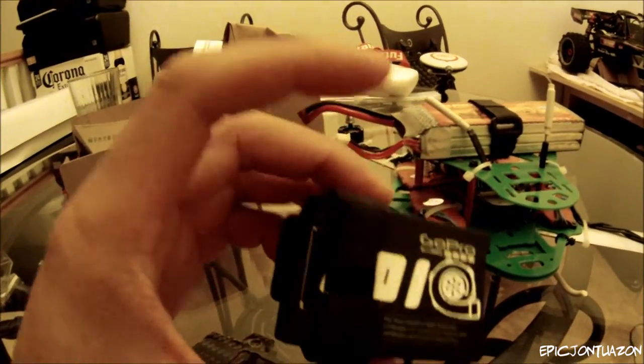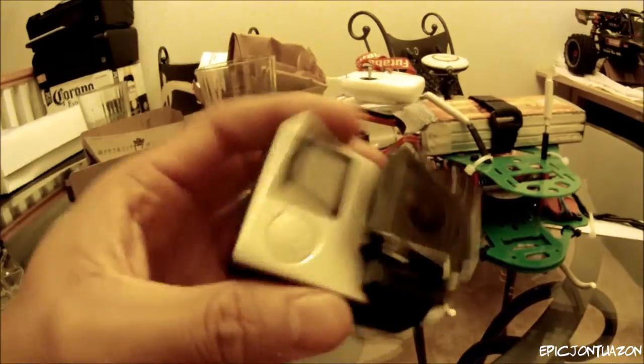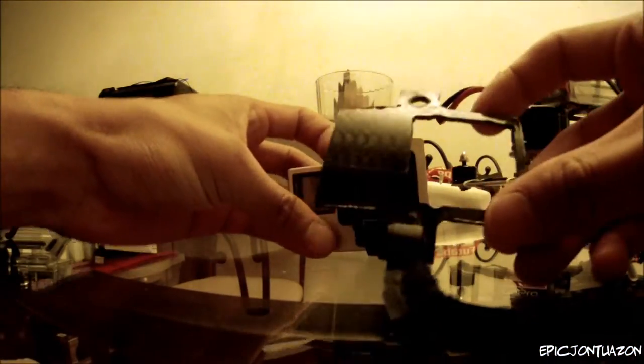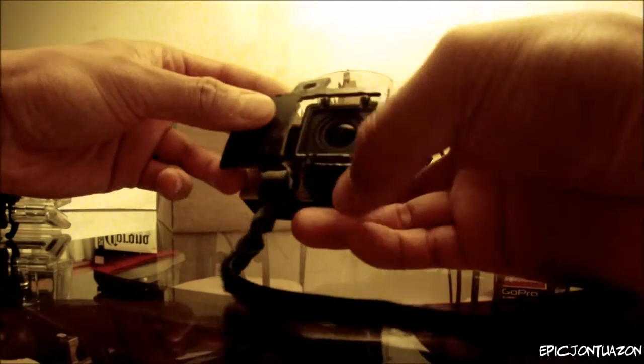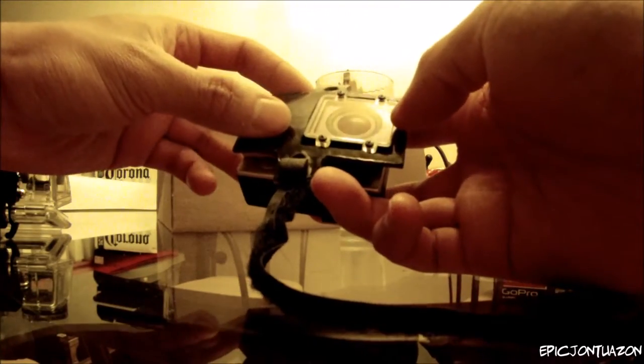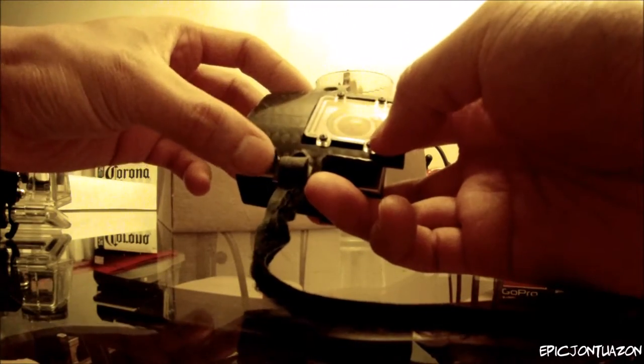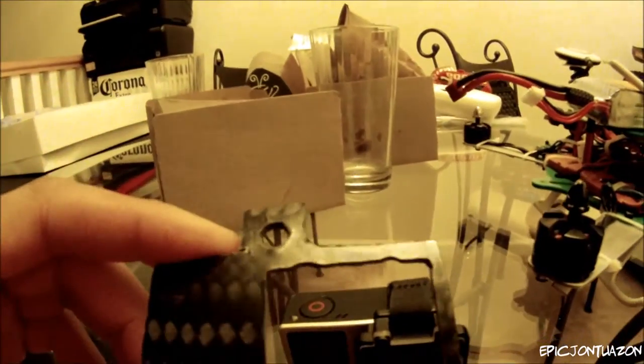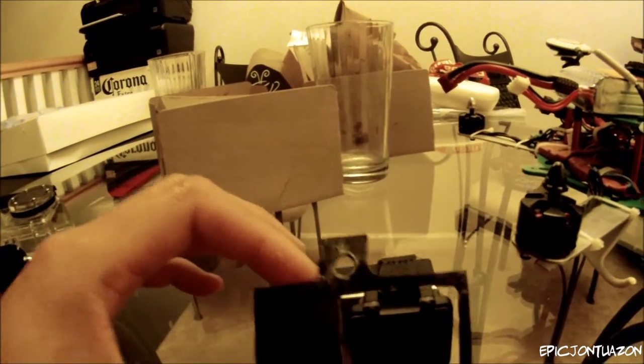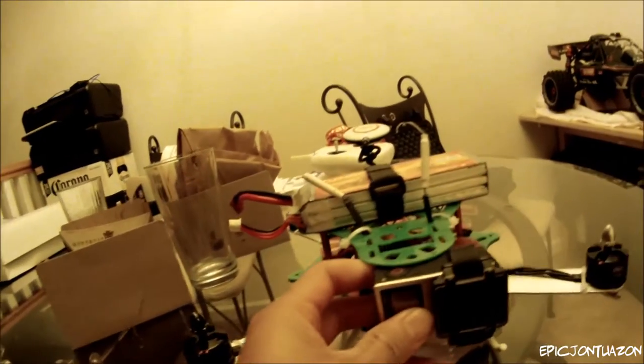Alright, so I cut out the carbon fiber piece to match the Lumineer lens protector. You can kind of see here that I have little ridges cut out for these marks, and basically these two holes are gonna hold another velcro strap similar to what I have here, and it's gonna mount right into the quadcopter.